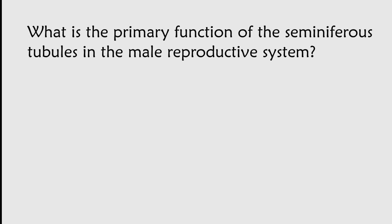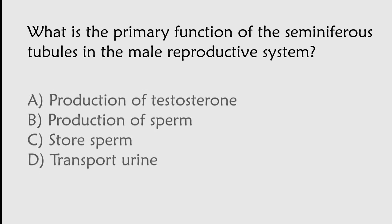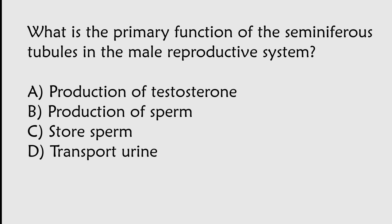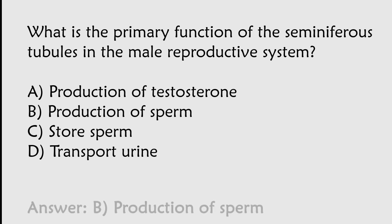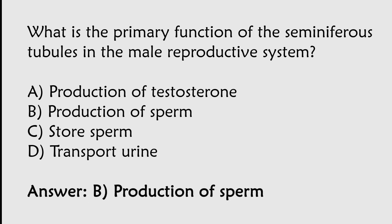What is the primary function of the seminiferous tubules in the male reproductive system? Options: Production of testosterone, Production of sperm, Store sperm, Transport urine. The correct answer is Option B. The primary function of the seminiferous tubules is the production of sperm.